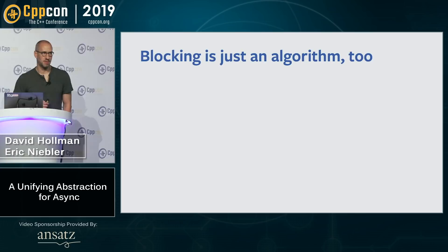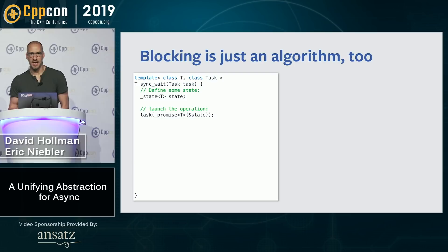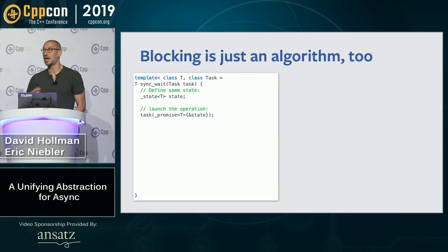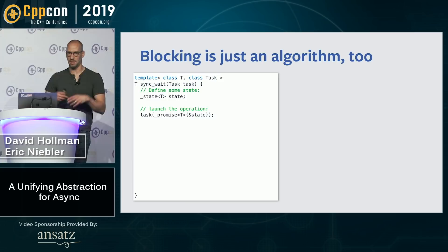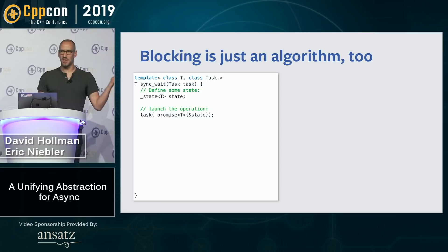Blocking is just a generic algorithm too. Let's call it sync_wait, and it takes a task—some lazy future. In the solution as developed so far, we can't really ask a task what its return type is, because we're using continuation passing style: values aren't returned to the caller, they're passed forward to the continuations. So in this implementation of sync_wait, we rely on the user specifying the type T they're expecting to get back.